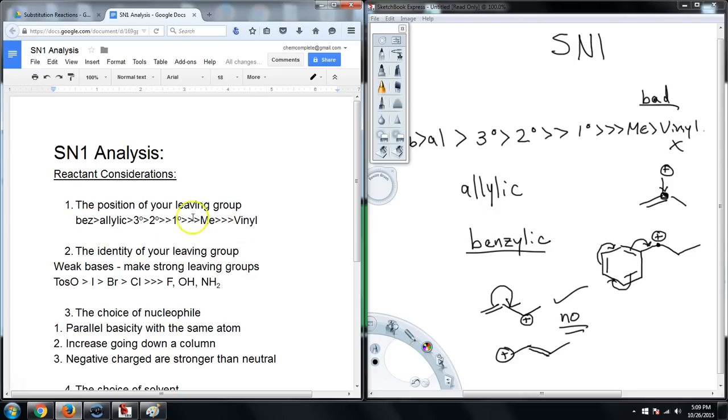And so this would be the ranking, the order where benzylic is best, vinylic is worst for the position of the leaving group in an SN1. Because again, let's put down here and remind ourselves, we're dealing with electronics in this case. This is not a steric argument. This is more of an electronic argument when we get to SN1. Stability of carbocations.